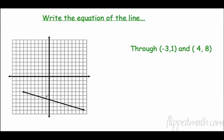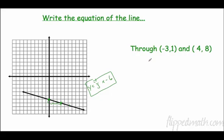Sometimes you'll be given a graph and need to write the equation. Where do we meet the y-axis? At negative 6, so y equals something times x minus 6. To find slope, I identify two points on the grid lines — the slope is down 1 over 3, so it's negative one-third. The equation is y equals negative one-third x minus 6.